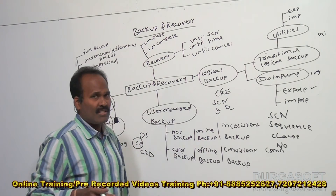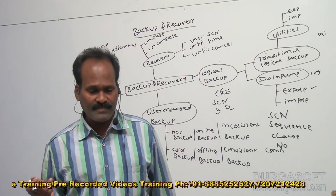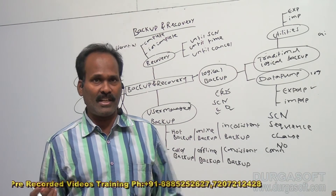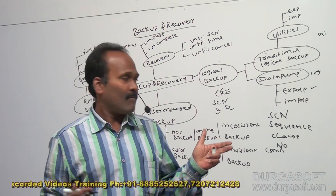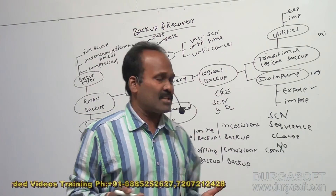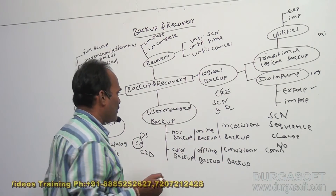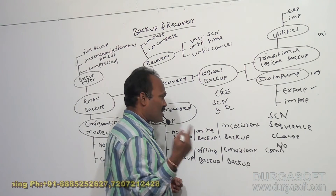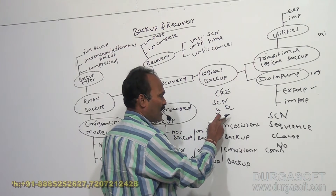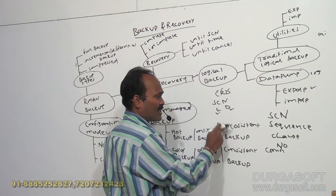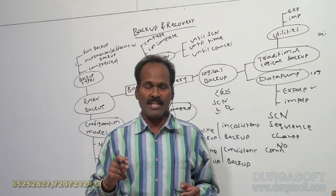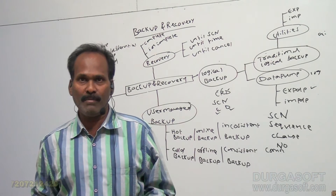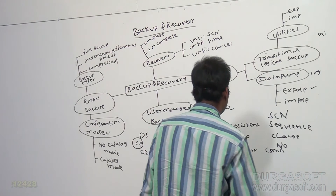In some cases — for example, when the database is shut down in abort mode — Oracle is not able to update the Sequence Change Numbers in control files and data files. At that moment, the database becomes inconsistent, leading to an inconsistent state. If you take a backup in such a case, that backup is called an inconsistent backup. Inconsistent backup means the Sequence Change Numbers of control file and data file will be different.